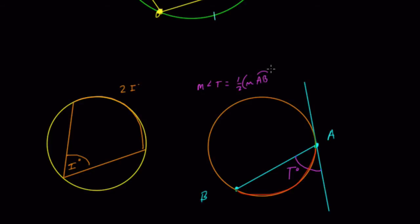If this is angle T, this is the arc it intercepts, AB. So T is half of AB, just like the inscribed angle is half of its arc. And if we flip it over to angle O for orange, O is also half of the measurement of the large arc AB.